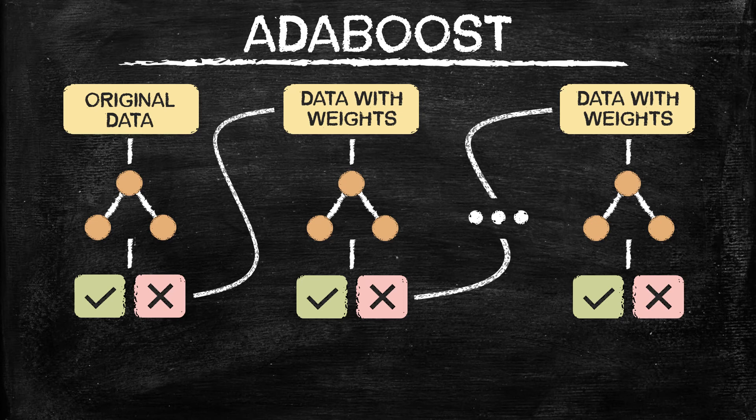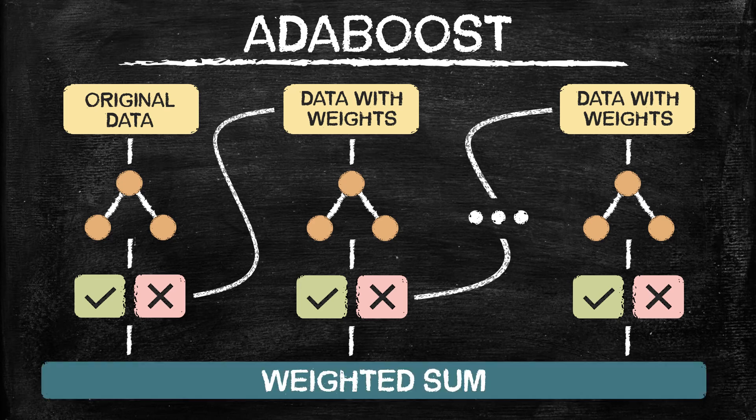Once we have all of these models trained, we come up with an equation for a weighted sum. Obviously, some of these algorithms are going to be better at splitting and predicting the data than others, so we want to weight those algorithms more heavily. We assign a weight for each of these outputs in order to come up with a final result that gives us the end class we're looking for.